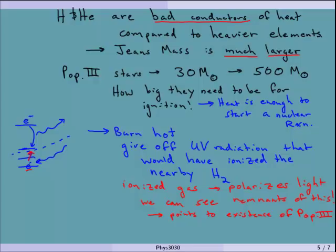We can see remnants of this polarization, and this points to the existence of these population 3 stars. One of the places where this polarization is seen is in the CMB — specifically in WMAP satellite data. We see this polarization, which actually requires pretty early population 3 stars.